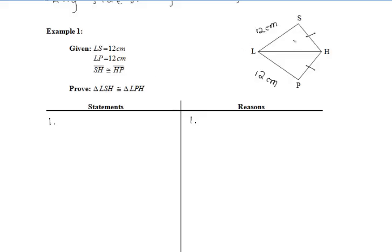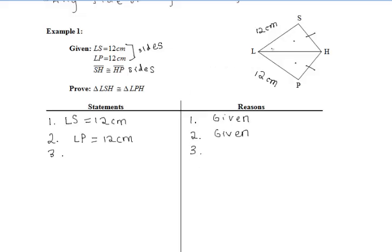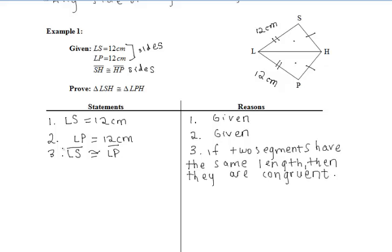We want to prove triangles LSH and LPH congruent. Segments LS and LP are sides of the triangles, and SH and HP are sides as well. After writing in our given information, since LS and LP are the same length, they must be congruent — if two segments have the same length, they are congruent. That gives us one pair of congruent sides, so we have one S so far.